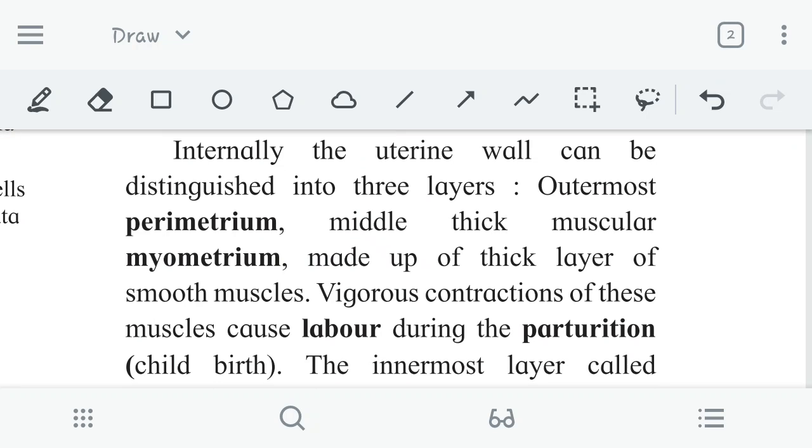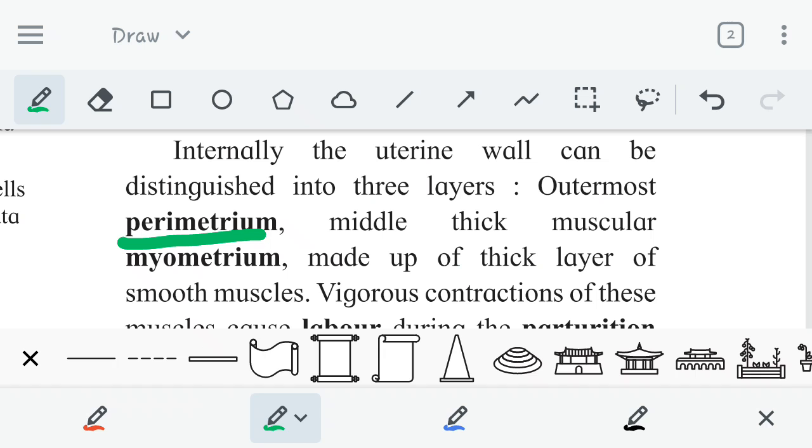Internally the uterine wall can be distinguished into three layers. First one is the outermost layer, another one is the middle layer, and the third one is the inner layer. The outermost layer is called perimetrium. Perimetrium means perimeter layer or outer layer.